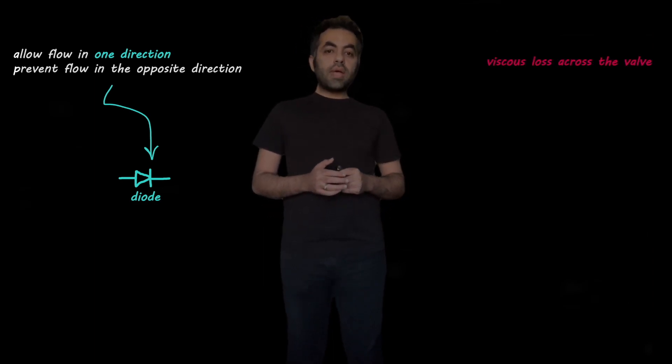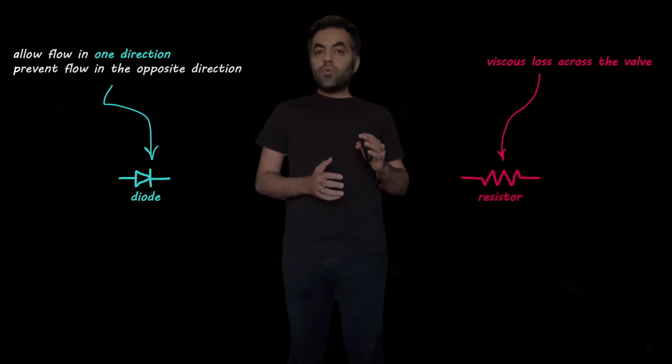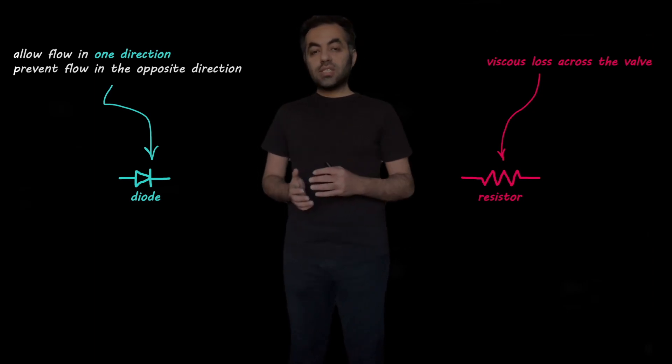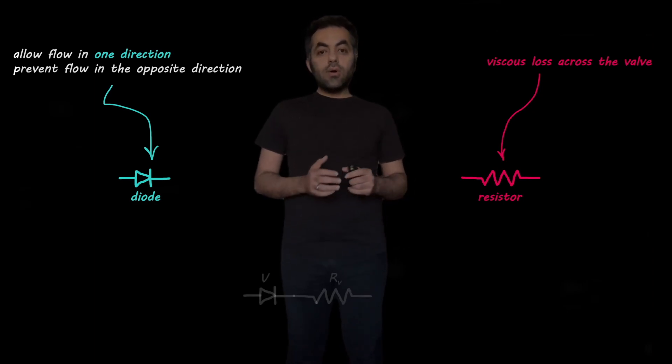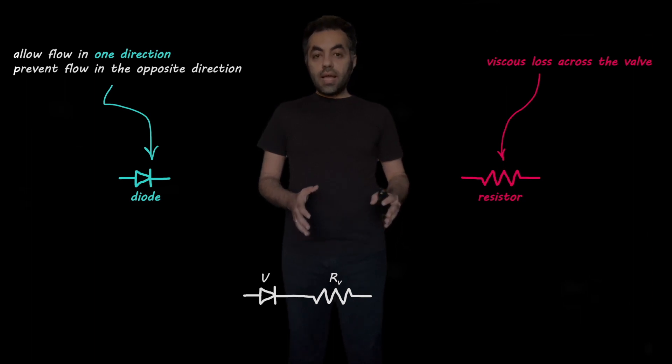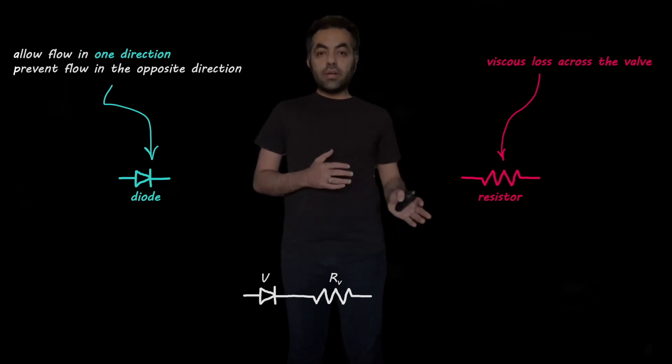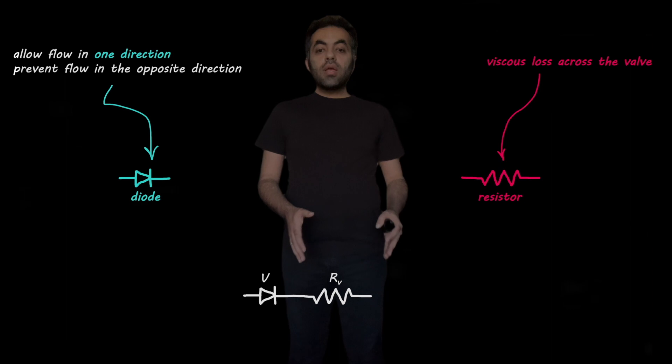But also we know that there is a viscous loss across a valve. This viscous loss can be modeled using a resistor similar to when we used resistors in order to model viscous loss in the vessels. So combining these two elements, a diode and a resistor, we can form this piece of circuit that can be used in order to model different valves in the cardiovascular system.